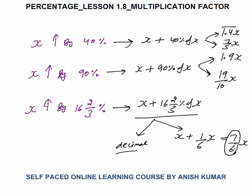The important thing is to also know the reverse. As I told you earlier, if x becomes 1.4x, it automatically means there is an increase of 40%. If x becomes 1.7x, it automatically means there is an increase of 70%. That is the objective of this lesson.